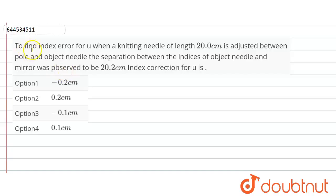Hello friends, the question is given here: To find the index error for u when a knitting needle of length 20 centimeter is adjusted between the pole and the object needle, the separation between the index of the object needle and the mirror was observed to be 20.2 centimeter. Index correction for u.